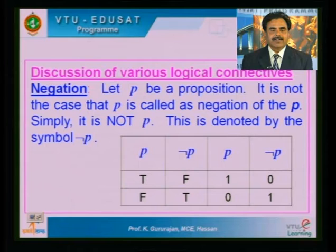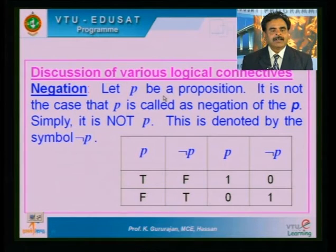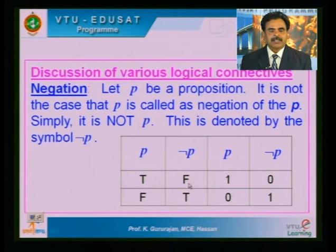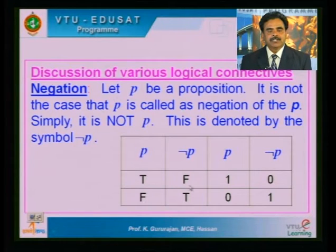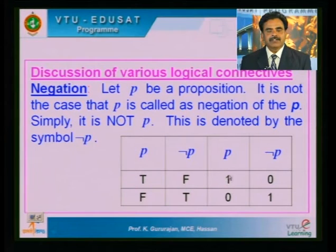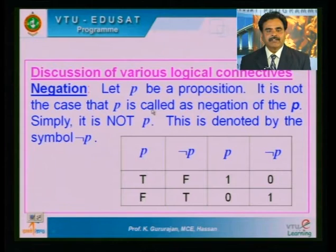Various logical connectives — to begin with, what is a negation operator? If P is a proposition, then not-P is called the negation of P. Whenever P is true, its negation is false; if P is false, its negation is true. We can assign binary 1 for true and 0 for false. That is how to construct the truth table for P and its negation.